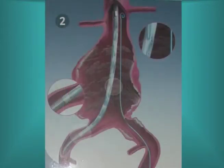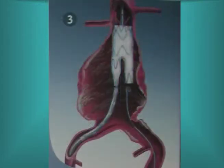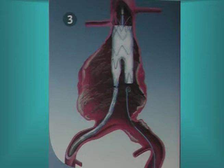Over these guide wires, stent grafts are placed under x-ray control. The position of the renal arteries is identified and markers on the pre-packaged stent graft are used to align the top of the graft with the immediate infrarenal aorta. The plastic covering of the stent graft is removed progressively and the stent expands to seal against the infrarenal aortic wall.